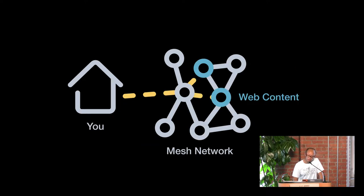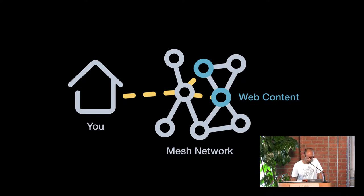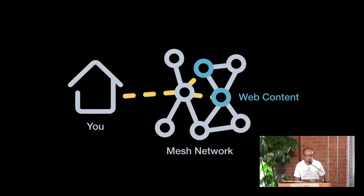I'm particularly interested in the model where the content is also distributed within the mesh network, so you don't necessarily need an exit node. The content is located among your peers — the same relaying nodes that help you relay messages are also holding content. This is what I mean by peer-to-peer applications on a mesh physical infrastructure.